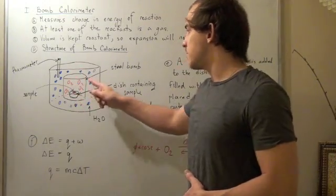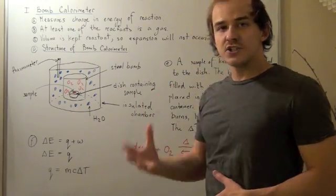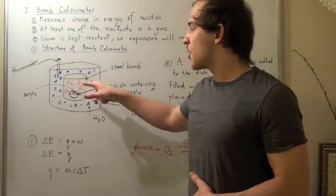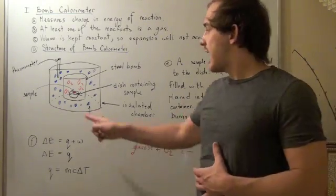The innermost chamber is called a steel bomb and it's basically the location of our reaction. This is where our reaction occurs. And it's made from steel so that the gas can't expand our system.